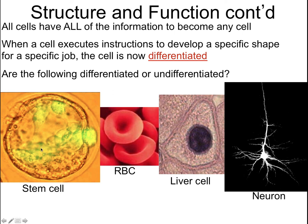A stem cell is highly undifferentiated — it's just a round ball that can become anything depending on which genes are activated. A red blood cell is differentiated; it has that indentation and a specialized shape to carry oxygen. A liver cell has a more basic shape and is only partially differentiated. But a neuron is super differentiated with a super specialized shape to do a very important job.